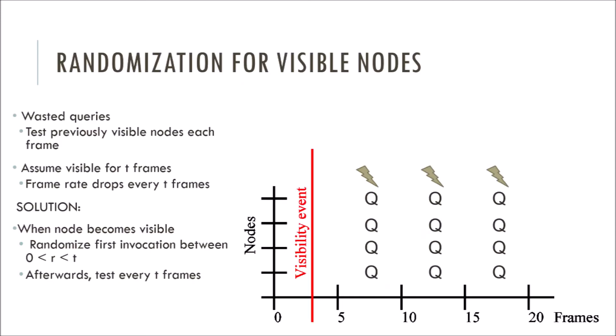Another building block is the randomization of visible nodes. Like the old method, CHC++ assumes a visible node to stay visible for T-frames and will only be tested every T-frames. While this helped reduce the number of queries, the queries were temporarily aligned. This alignment becomes problematic when nodes tend to become visible in the same frame, as you can see in the graph. If 4 nodes become visible at frame 3, as shown by the red visibility event line, and we assume that they stay visible for 5 frames, then all 4 nodes will be tested at the same times at frame 8, frame 13, and frame 18.